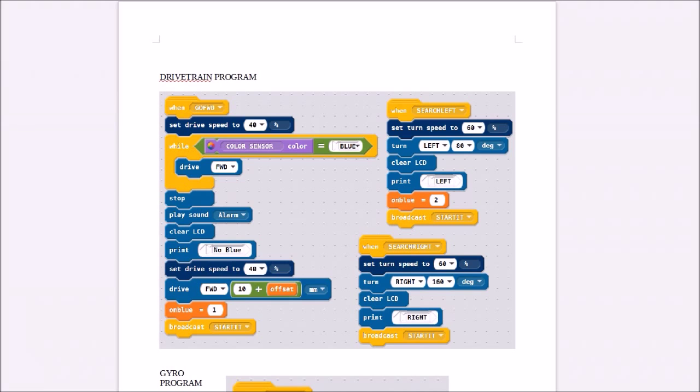You stop, you play a sound, you print something on the screen. You set the drive speed to 40% again. Then you drive forward 10 millimeters plus the offset, which for VEXi is 80 millimeters. That'll line up the robot so that when it turns, it will turn either left or right, and the sensor will be aligned with the blue tape. Set on blue value of one because you've just run out of tape, so you might as well turn left first. Then you broadcast started. And since on blue is one, it'll turn left.